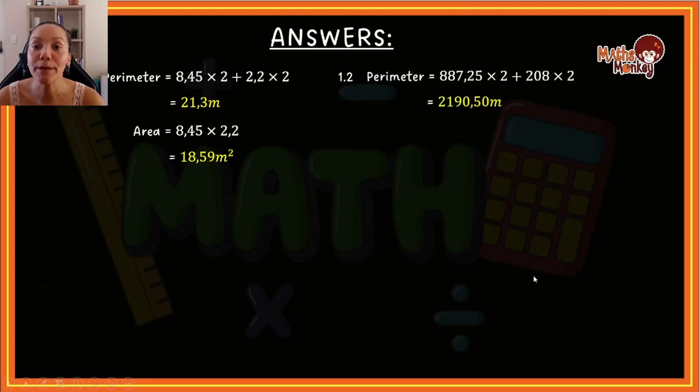For 1.2, the perimeter 887.25 × 2 + 208 × 2, and that will give us 2190.50 meters, and then also if you take those two values for the area and multiply them with each other, you end up with 184,548 meters squared. So I hope you're getting these questions right.